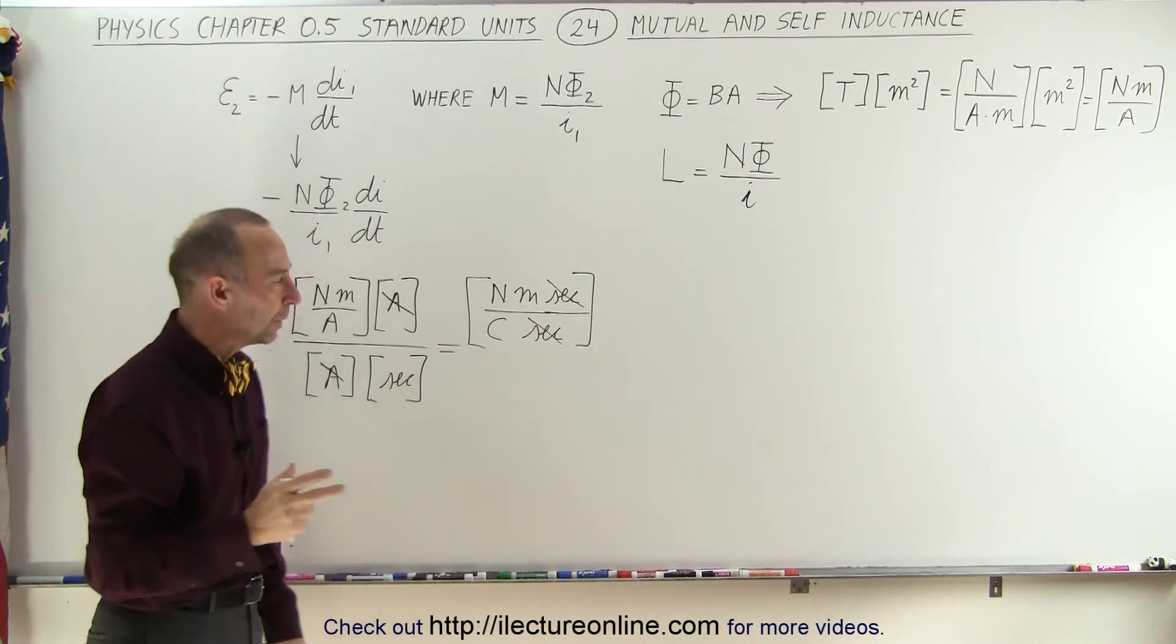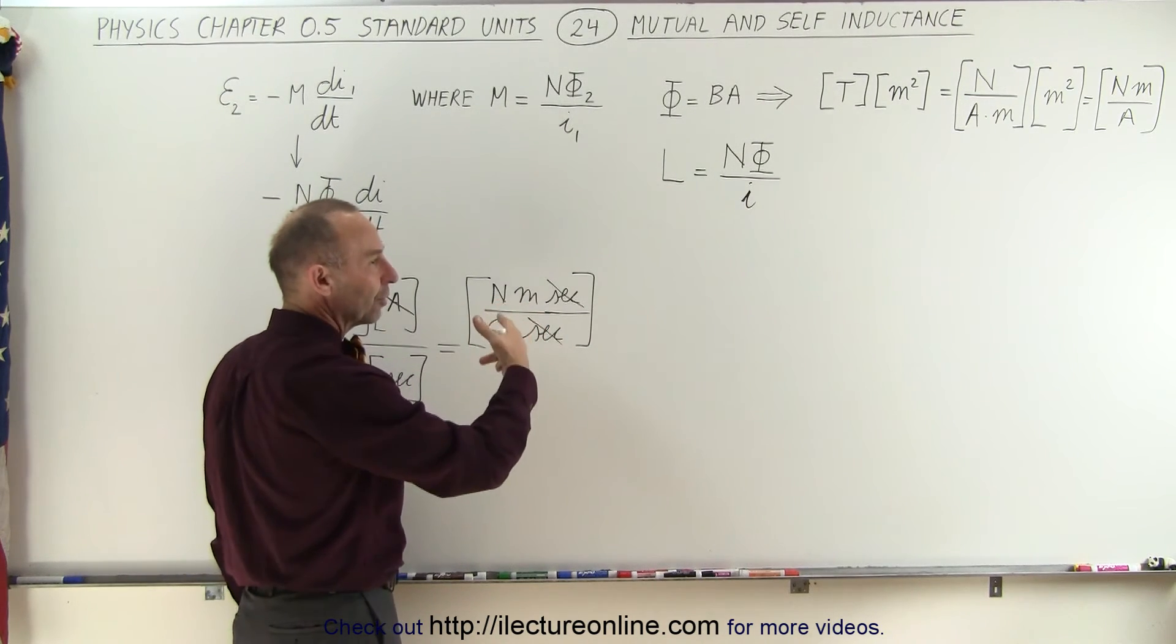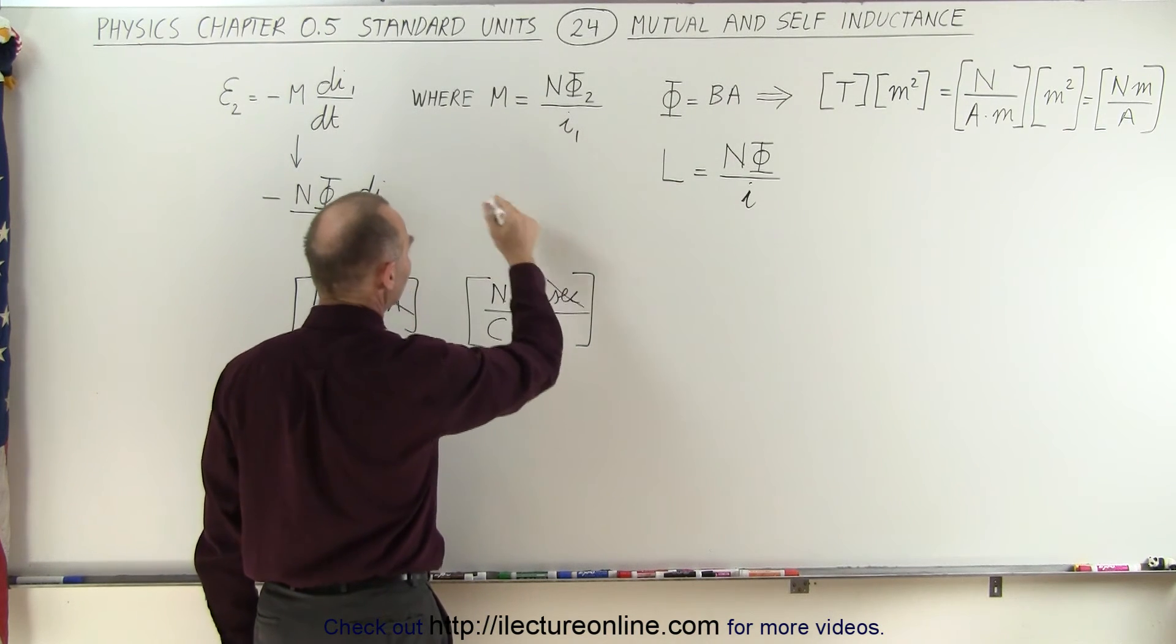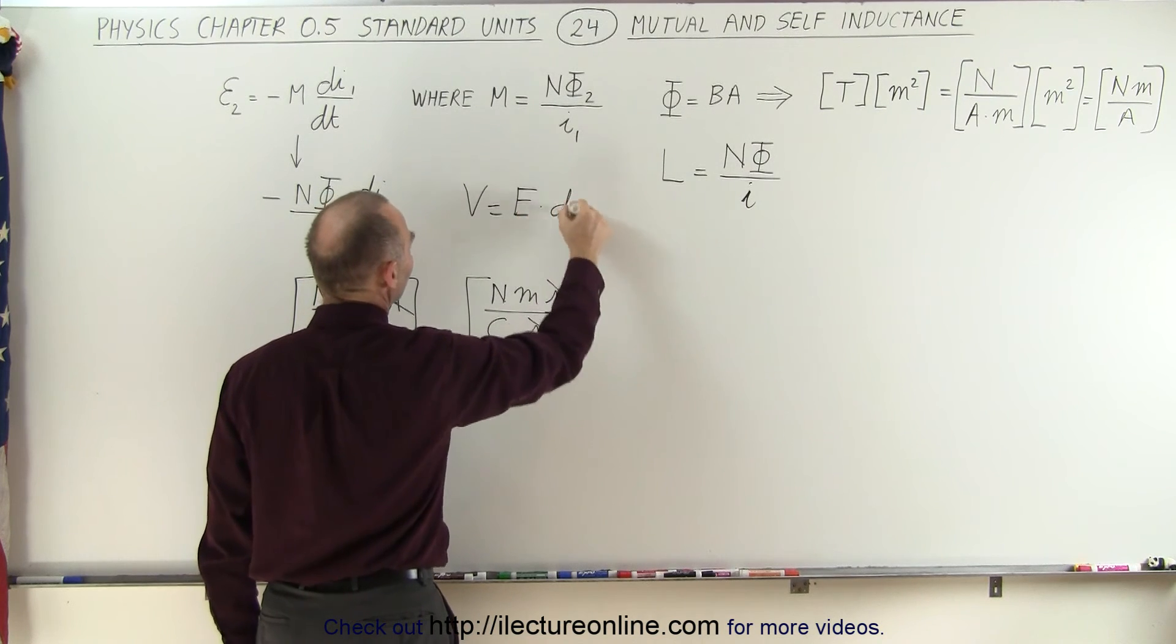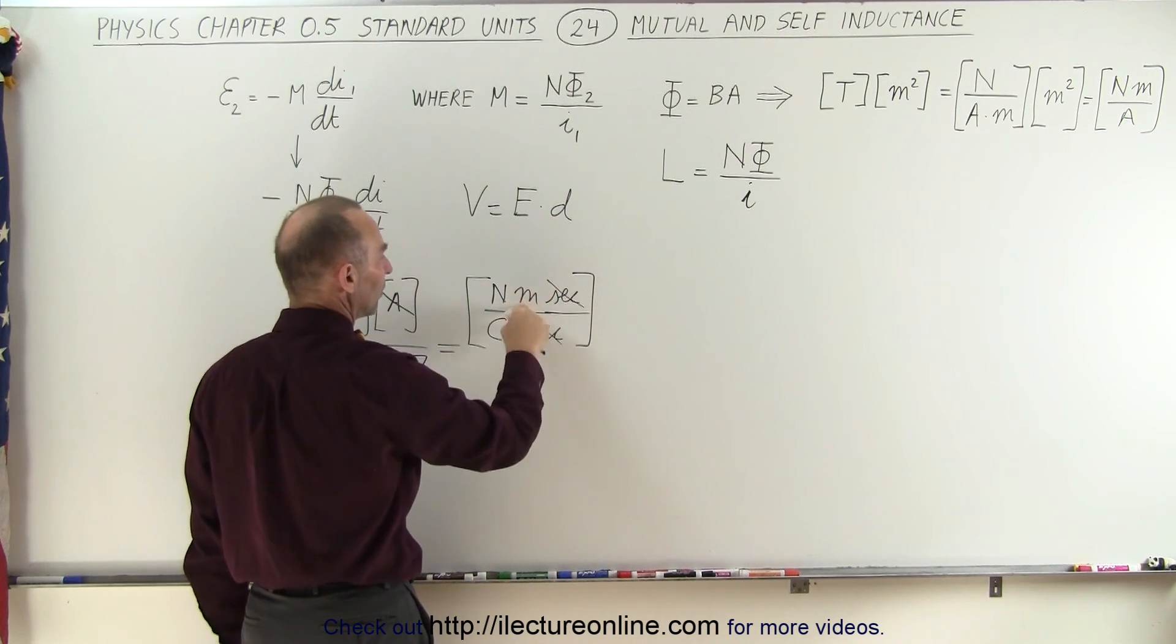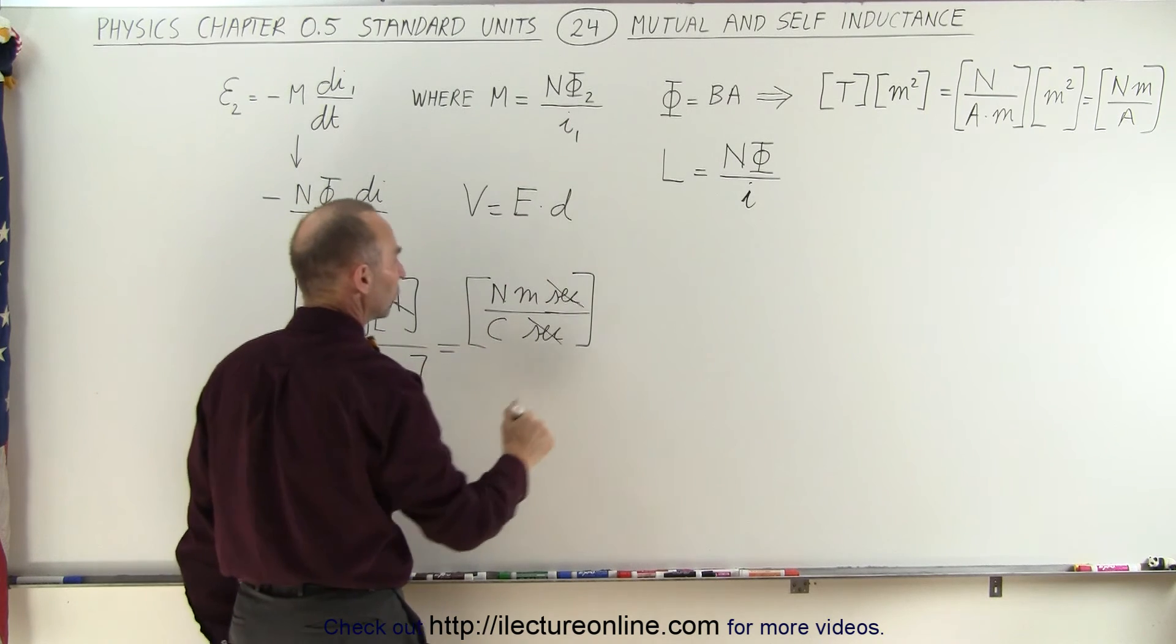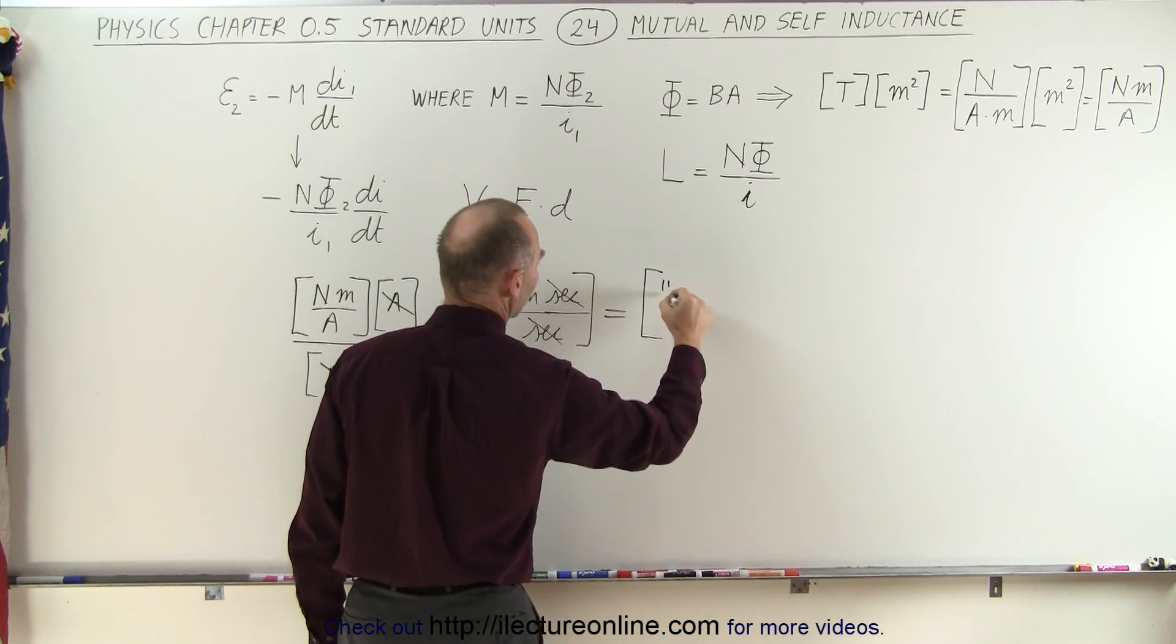Well, newtons per coulomb is the unit of the electric field. And meters is the unit of distance. And we know that there's a relationship between voltage and electric field, that the voltage is equal to the electric field times the distance traveled. So you see that the units for electric field is newtons per coulomb, the units for distance is meters. Therefore, newton meters per coulomb are the units for voltage.